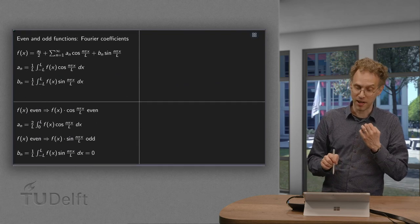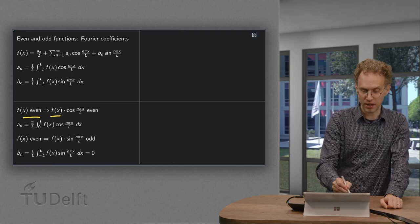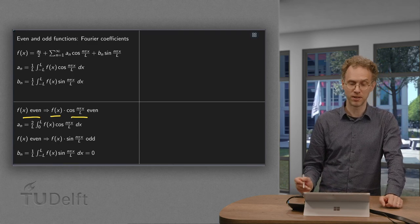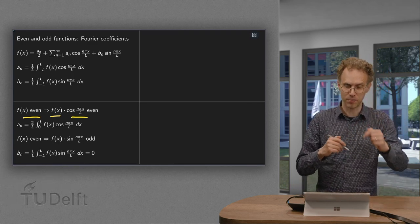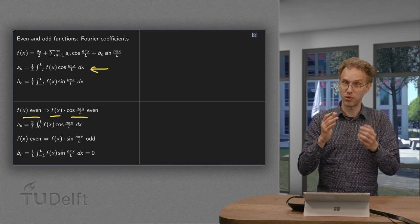Now what happens if f is even? If f is even then f times the cosine is even. So if we then integrate from minus l to l to compute the a_n we have an integral of an even function.